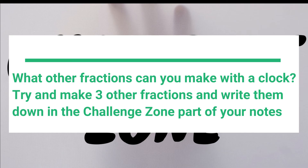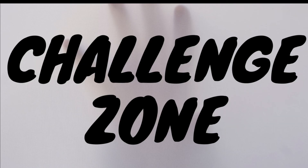Try to find three other denominators that you could use, and then write down how many minutes that would be. Go ahead and write them down in the challenge zone part of your notes. When you're done, go ahead and push play. You're only trying to find three, but there are eight or nine other ones. So if you want to try to find all of them, go for it, and then we'll go over them together very quickly.